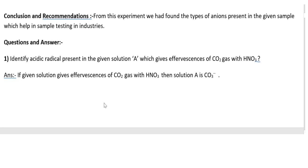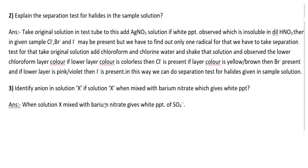Question 1: Identify the acidic radical present in given solution A, which gives effervescence of CO₂ gas with HNO₃. Answer: If the given solution gives effervescence of CO₂ gas with HNO₃, then solution A contains CO₃²⁻ ions. Next, explain the separation test for halides: take the original solution in a test tube, add AgNO₃ solution. If white precipitate is observed which is soluble in dilute HNO₃, then Cl⁻, Br⁻, or I⁻ may be present.